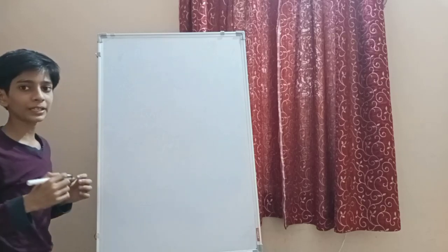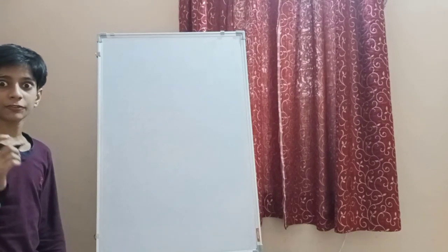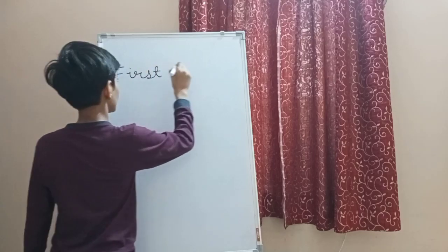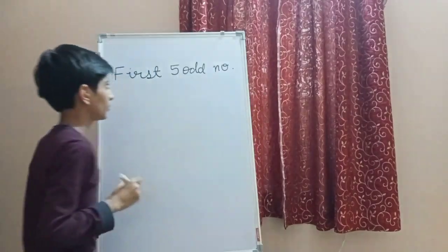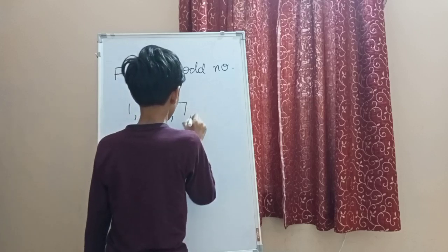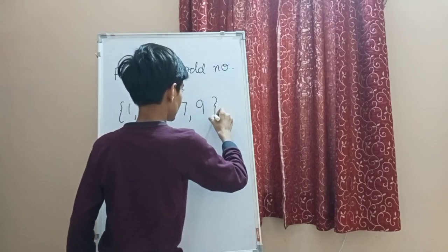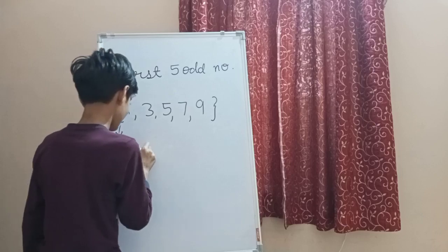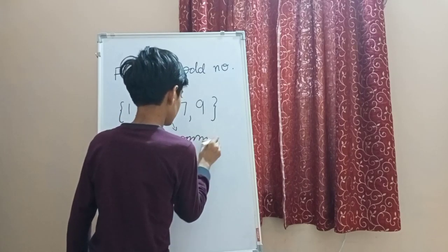Now we will take some examples to know more about sets. We will write the first five odd numbers. The first five odd numbers are 1, 3, 5, 7, and 9. All sets are written in brackets called braces, and each number is separated by commas.